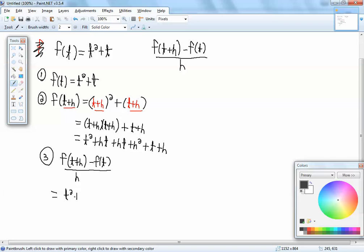So F of T plus H is all of this. So we've got T squared plus, I didn't simplify that, did I? HT plus HT is 2HT, plus H squared, plus T, plus H, minus, and then you want to put F of T inside the parentheses. Now, F of T from step one, we said was T squared plus T, all over H.